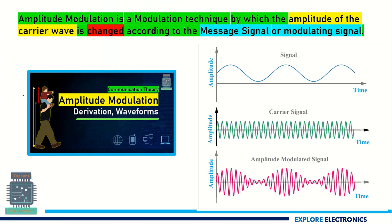In the previous video, we have seen amplitude modulation and we have derived the expression for the amplitude modulated wave, and we have also seen waveforms. So, if you recall the definition of AM: amplitude modulation is a type of modulation technique by which the amplitude of the carrier wave is going to be varied or changed in accordance with the message signal or the modulating signal.